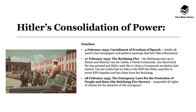Van der Lubbe had no links to the KPD, who really were the only left-wing party that rivalled support for the Nazis. However, Hitler used this as a pretext to crush any threat that the KPD posed to the Nazis, and therefore he arrested KPD deputies and banned them from the Reichstag. He was really skilful in manipulating this situation.